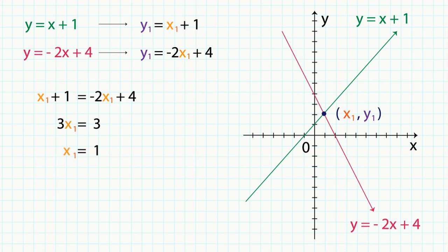We substitute this value back into the first equation. Then we get y1 is equal to 1 plus 1, which is equal to 2. So that gives us the intersection of the two lines as 1 comma 2.